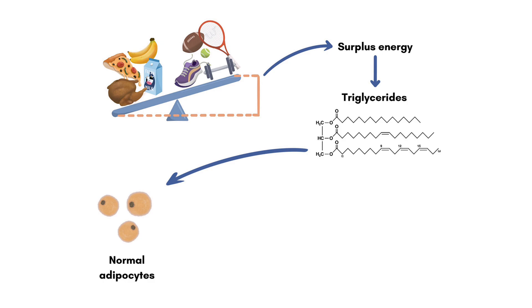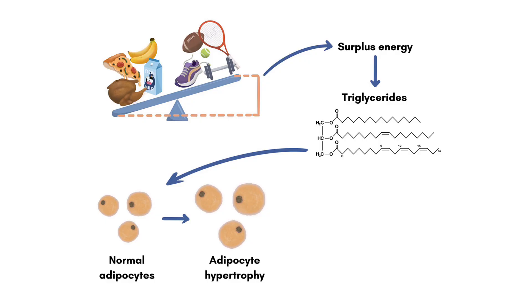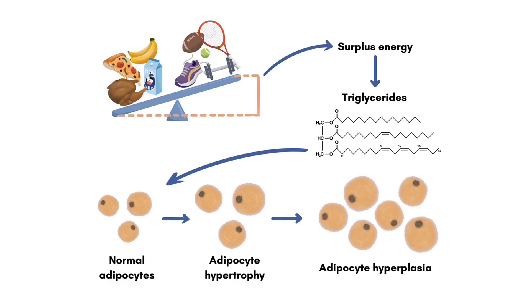Over time, as more energy is consumed than expended, adipocyte hypertrophy, or the enlargement of individual fat cells, occurs, followed by adipocyte hyperplasia, which is an increase in the number of adipocytes. As adipose tissue expands, it undergoes remodeling and releases various adipokines, which are signaling molecules secreted by adipocytes.